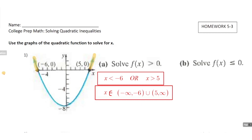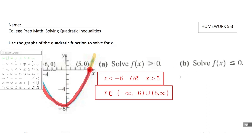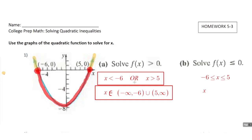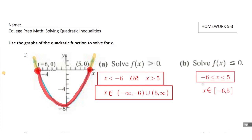For part b, it says solve for when f of x is less than or equal to 0. So in this case, we're looking for where the graph is either at 0 or below it. We can see it's going to be this section right here, including the intercepts. So we want to say that x is in between negative 6 and 5, inclusive. So negative 6 is less than or equal to x is less than or equal to 5. Using set notation, x is an element of the set from negative 6 to 5, using brackets because we want to include those endpoints. Either representation is perfectly fine — just make sure you're comfortable reading and interpreting both of them.